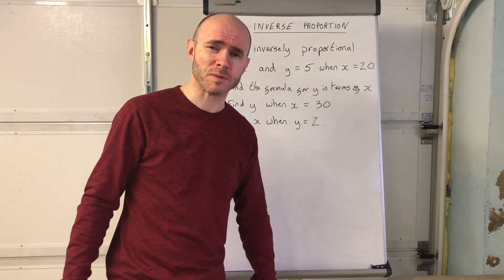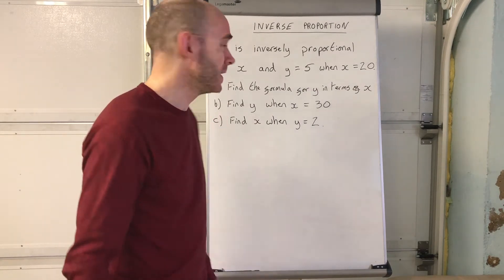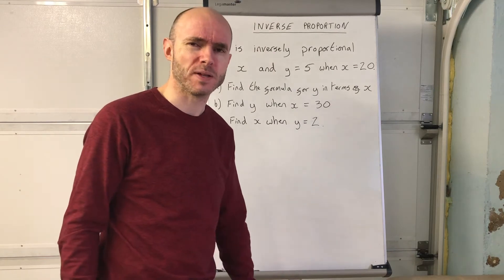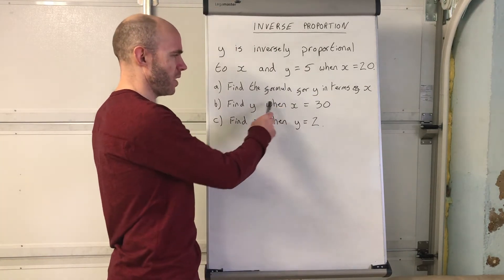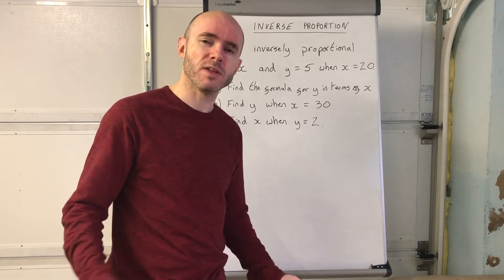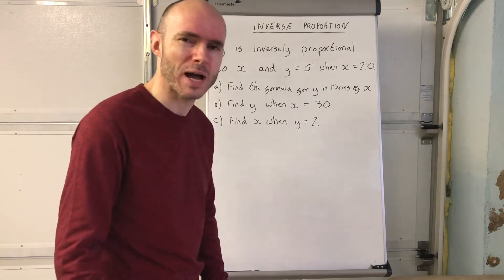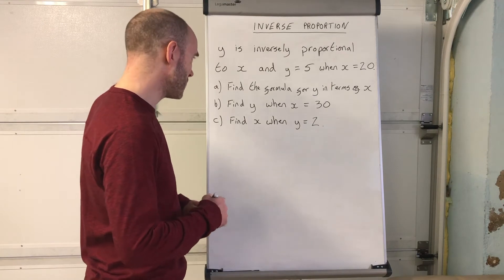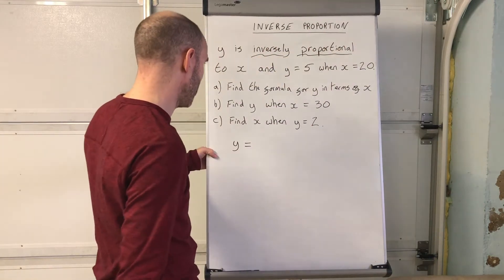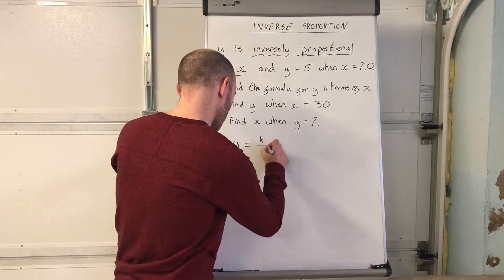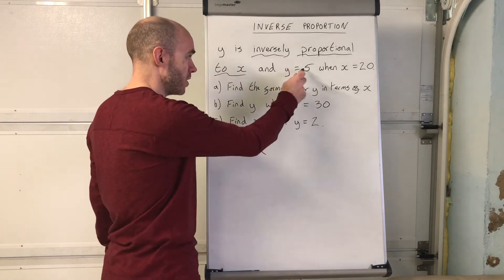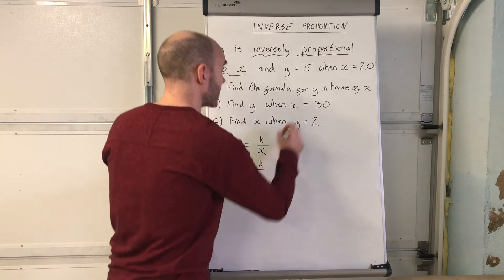Tea all finished — I'm ready to go with some examples. Here's one: you're told y is inversely proportional to x, and y equals 5 when x equals 20 — a fairly standard GCSE-type question. You've got to find the formula for y in terms of x, find y when x is 30, and find x when y equals 2. The starting point when y is inversely proportional to x is y equals k over x. Then substitute in the known values: y is 5 and x is 20.